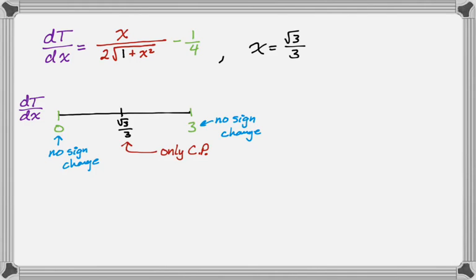So I'm actually going to test zero. If I test zero, I obviously get -1/4. So when I test zero, I get negatives. And then if I test 3, I get 3/(2√(1 + 9)) minus 1/4—well, whatever I get is bigger than -1/4. So the derivative goes from negative to positive.